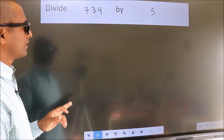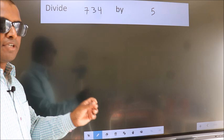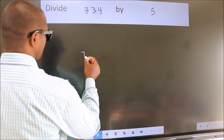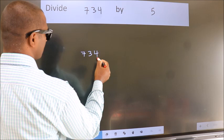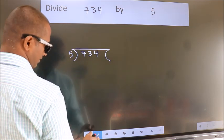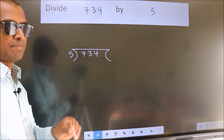Divide 734 by 5. To do this division, we should frame it in this way: 734 here, 5 here. This is your step 1.